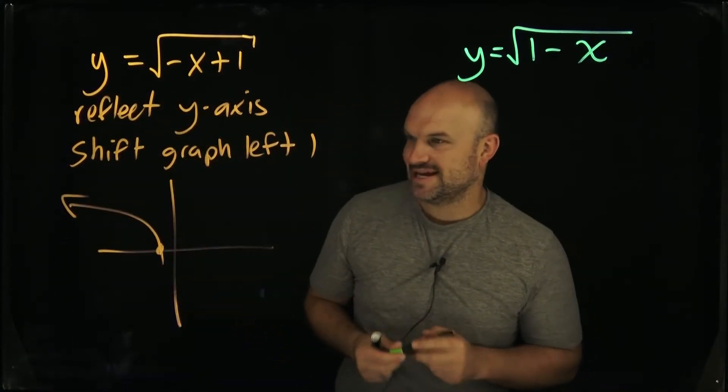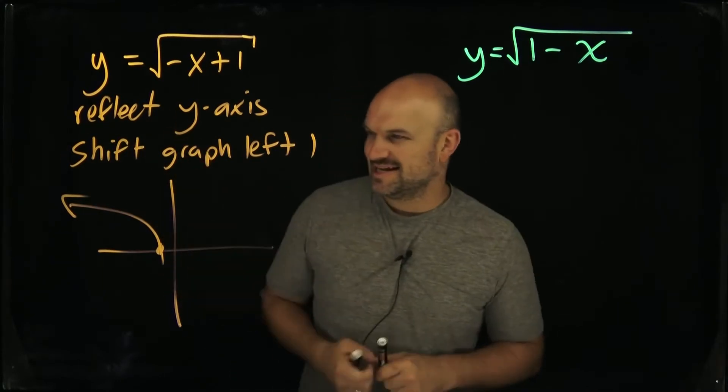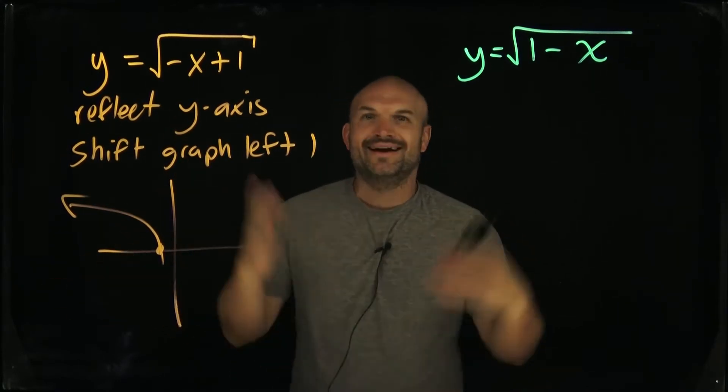And therefore, they'll go ahead and take that graph and they'll say, all right, that is my graph. That looks like it has a domain from negative infinity all the way to negative one. I am done.